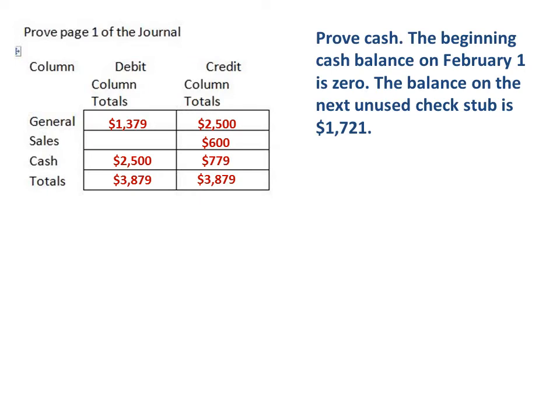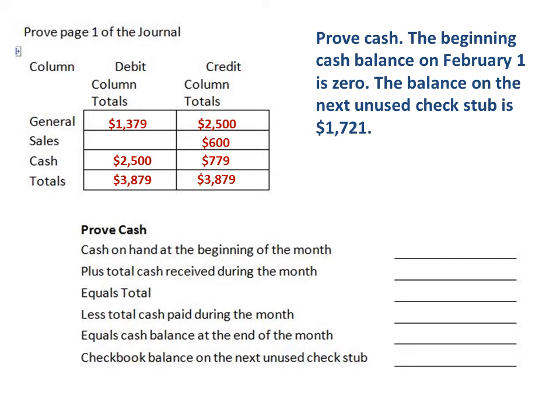Now we move on to what is called proving cash. When you're proving cash, this will happen at the end of the fiscal period — maybe end of the month, and at various times too. We know that the beginning balance on February 1 is $0, and the balance on the next unused check stub is $1,721. You'll see where those numbers come into play in a second.